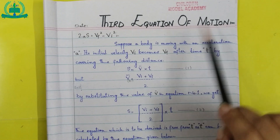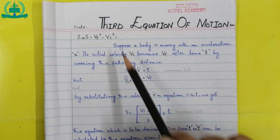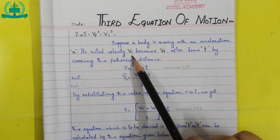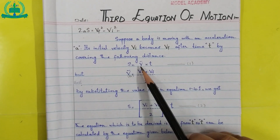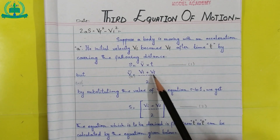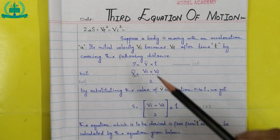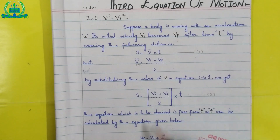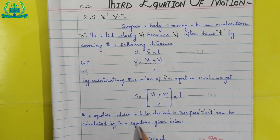Third equation of motion: 2as equals vf squared minus vi squared. Suppose a body is moving with acceleration a; its initial velocity vi becomes vf after time t by covering distance s. Distance s equals velocity into time, but average velocity is vi plus vf upon 2. By substituting into equation 1, s equals vi plus vf upon 2 into t. The equation to be derived must be free from t, so t is calculated from the equations below.